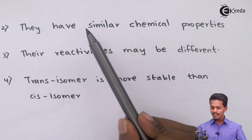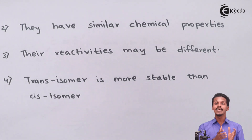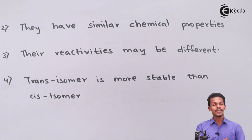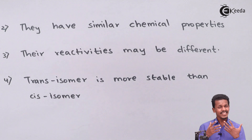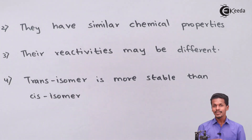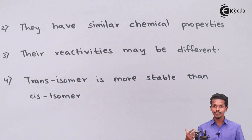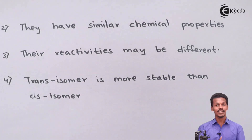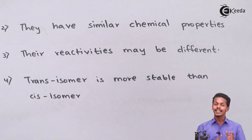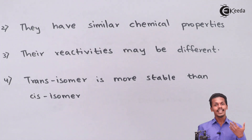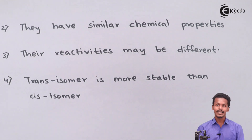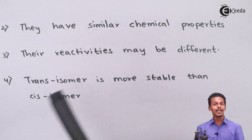The second point is that cis and trans isomers have similar chemical properties. This is because they are the same molecule — the only difference is the spatial arrangement of atoms or groups. For example, both cis-but-2-ene and trans-but-2-ene will undergo hydrogenation — reacting with hydrogen to form butane — so their chemical reactivity is similar in both cases.